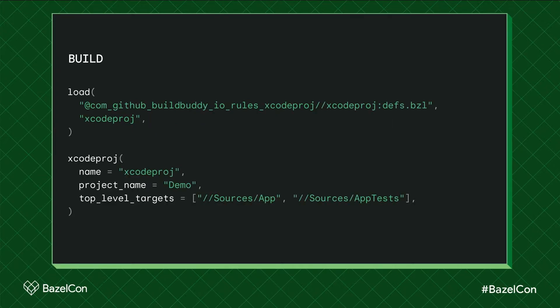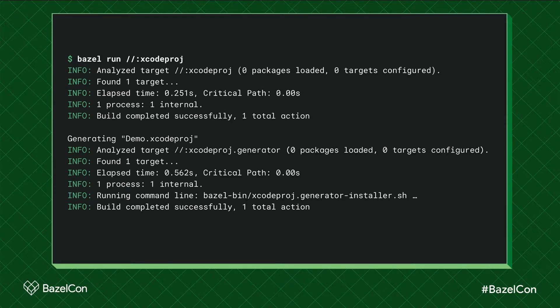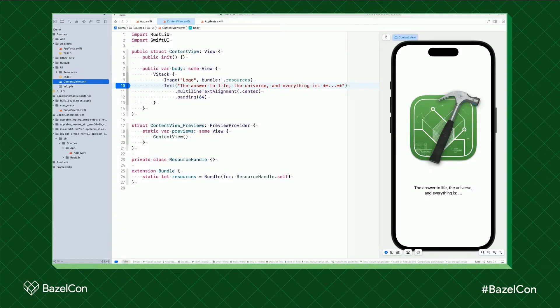Next, in a build file, you need to define an Xcode Proj target that includes all the top-level targets you want in your project. Transitive dependencies will be included automatically. And finally, you need to invoke Bazel run on that Xcode Proj target to generate the project. Now you can open the generated project and immediately start editing, running, and testing your targets.